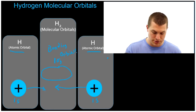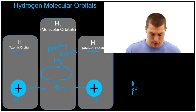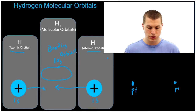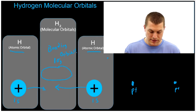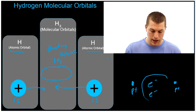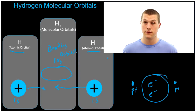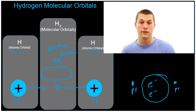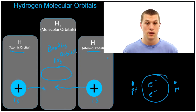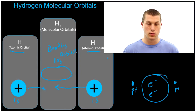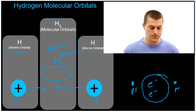Think about what that means: we have two hydrogen atoms with their protons coming together, and our electrons — there are two of them now — are going to be more likely to be hanging out in the center. That's what constructive interference is here. It's telling you that you're more likely to find the electrons in between the two protons, which means you have a bonding force. That's why this is called a bonding orbital.